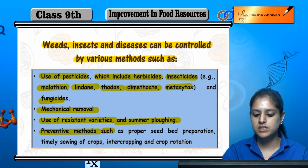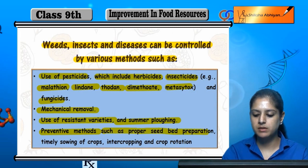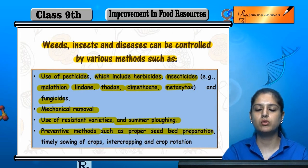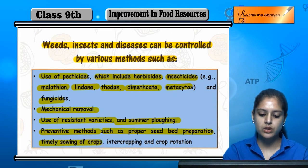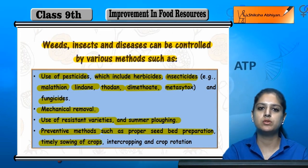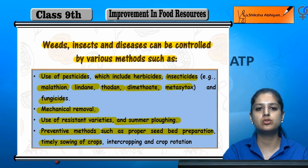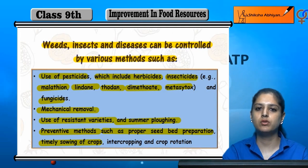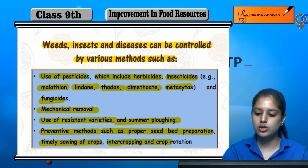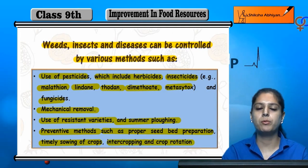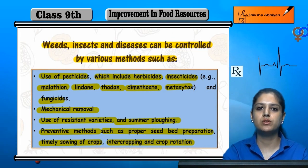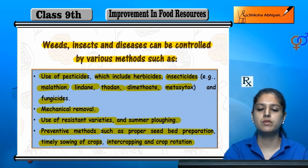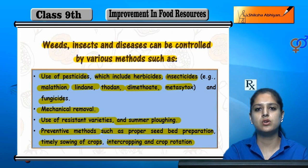Preventive methods include proper seedbed preparation — the seedbed should be properly prepared. Timely sowing of crops — if we sow crops on time, weeds and pests will not come. Inter-cropping and crop rotation are also used. By following all these methods, we can prevent and protect crops from weeds, insects and diseases.